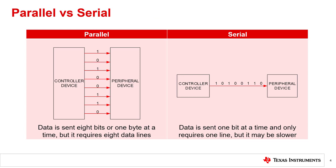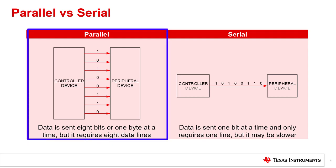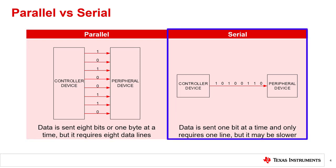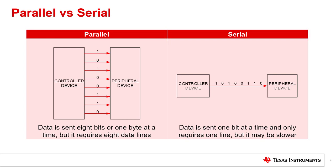Digital communications can take many forms, but there are two primary structures often used. First, communications can be parallel, where one line is used for each bit of data — for example, a single byte transmitted over eight parallel digital lines at once. Second, communications can be serial, where all the data bits are on a single digital line, sent one after another. Serial communications are more widely used in modern devices, reducing the number of communication lines between the controller and the peripheral device.